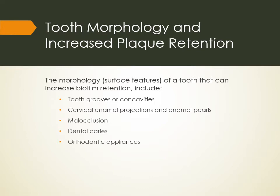Tooth morphology and increased plaque retention: the surface features of a tooth can increase biofilm retention. This includes tooth grooves or concavities, cervical enamel projections, and enamel pearls, which hide areas and increase potential for plaque biofilm retention. Malocclusion — if teeth are crooked or overlapping — makes it hard for the patient to remove plaque consistently. Dental caries lesions accumulate plaque and can form calculus. Orthodontic appliances such as braces and lingual retainers are also very hard to clean around.